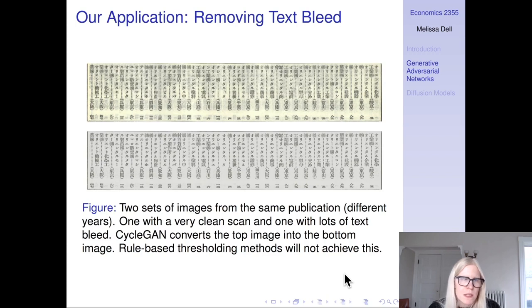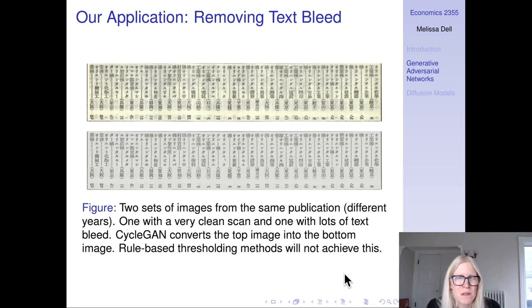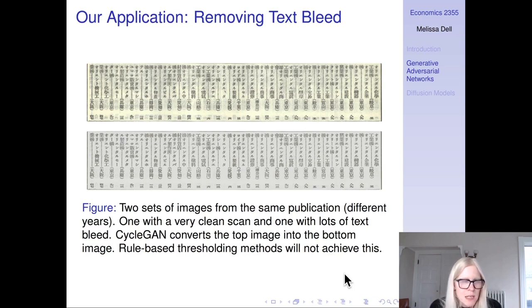I want to talk about one application we did that was pretty straightforward: removing text bleed. We have images where there's quite a lot of bleed-through from the opposite side of the page, and we were concerned this is affecting OCR and layout detection, especially if you want to do those things off the shelf. So we trained a GAN model to turn the top image into the bottom image, using entirely unpaired data — we had a dirty publication and a different year's cleaner scan — and to train this we used an architecture called CycleGAN.